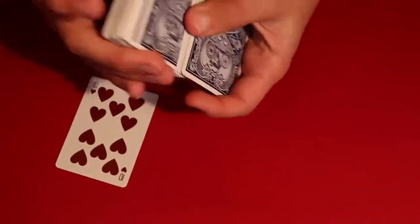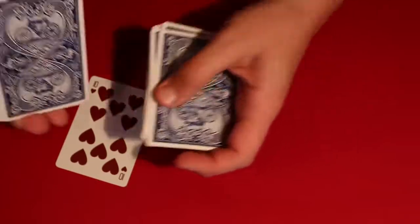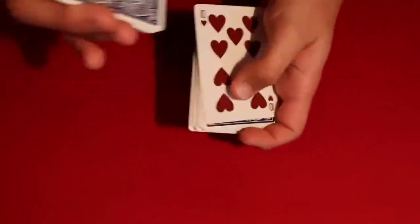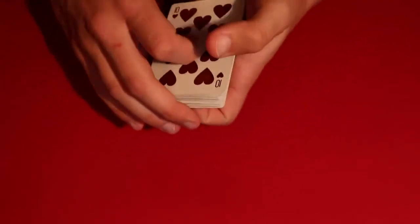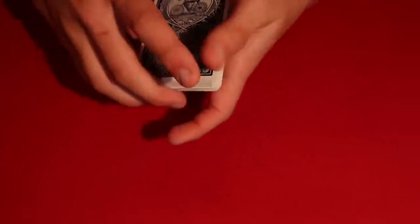So in real time, you have the spectators card, they go ahead they say stop. Let's say they said stop right around here. You go ahead, you take their card and you leave a nice little out jog card like this. And just like that, you've brought their card to the top. Now the next step is to bring it to the bottom.